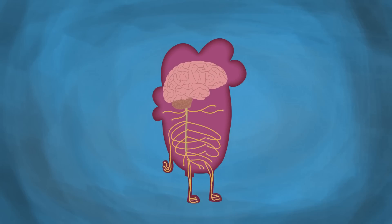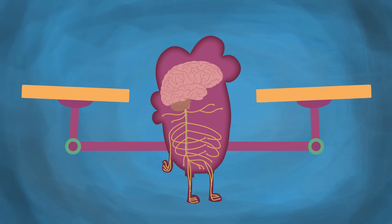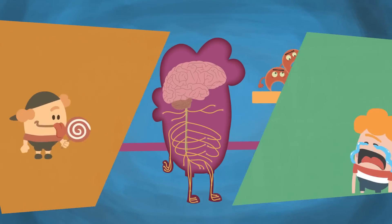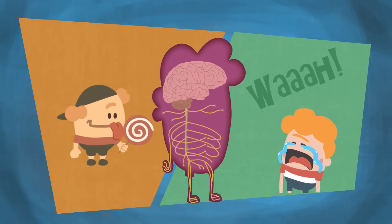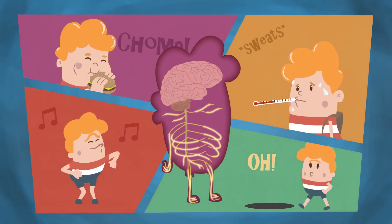As endocannabinoids communicate with receptors throughout your body, they create balance and help regulate many body and brain functions such as memory, coping with stress, pain and anxiety, and keeping hunger, body temperature, motor coordination, alertness, and balance in check.